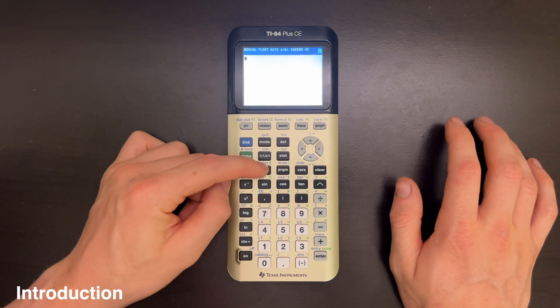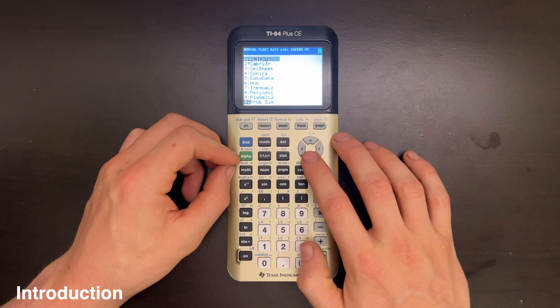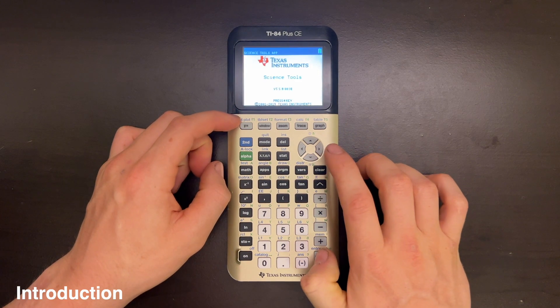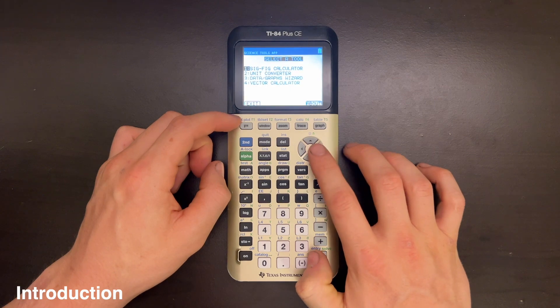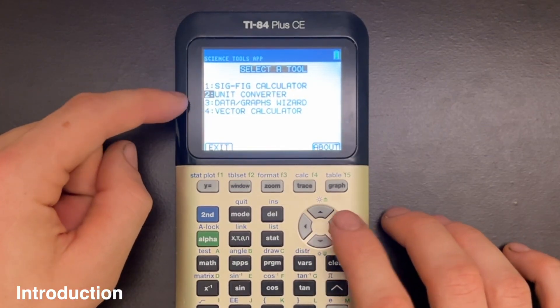So anyways, if you press the Apps key and then scroll down to SciTools here, and then hit Enter, and then Enter one more time, you'll want to go down to the second option here and select Unit Converter.